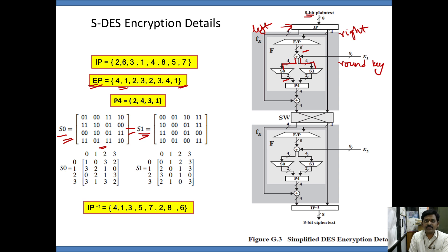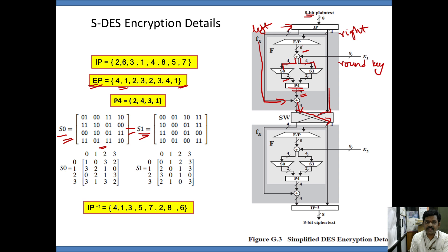The output from each S-box, which is 2 bits each, undergoes a permutation operation producing 4 bits. That particular output gets XOR'd with the left half that was set aside earlier. This 4-bit output gets swapped to the right side. Similarly, the earlier right side gets swapped to the left side for the next round.